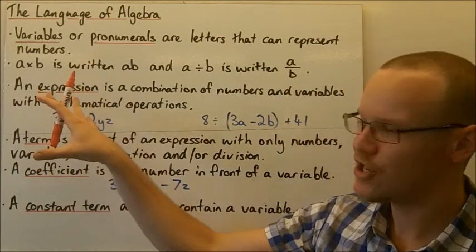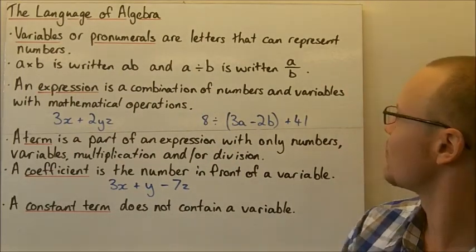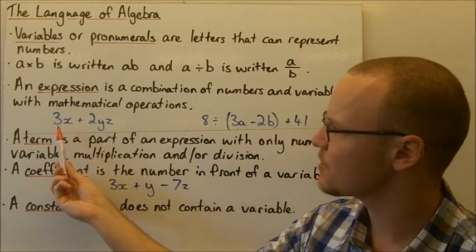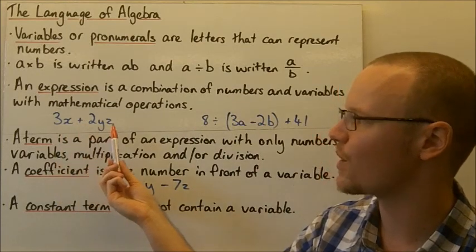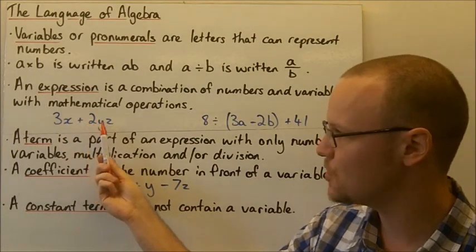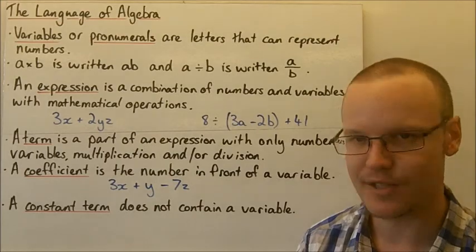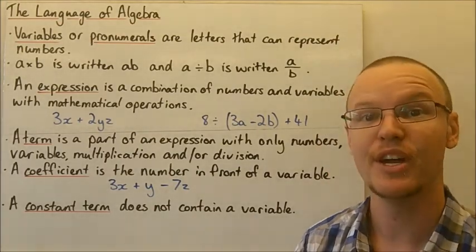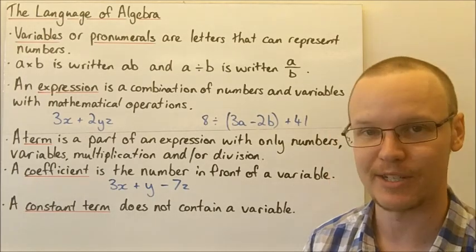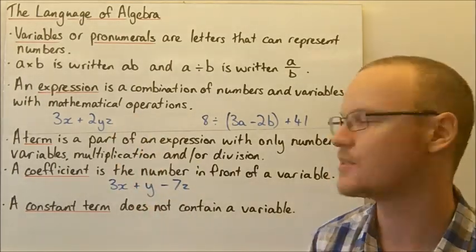An expression is a combination of numbers and variables with mathematical operations. Here we've got two expressions. This expression is 3x plus 2yz — so that is 3 times x, and 2 times y times z. If we knew the values for x, y, and z, we'd actually be able to evaluate that and solve it like we would any normal expression — any expression with just numbers that we know.